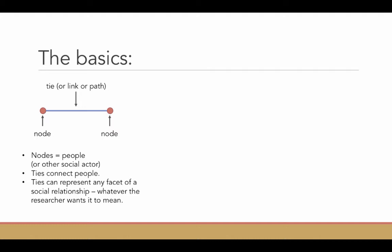That blue tie represents a social relationship. What exactly about that social relationship it represents depends on what the researcher is looking at. It could mean they're neighbors, that they take a class together, that they are friends, that they have a romantic relationship. They can really represent anything about a social relationship that you might want to study.